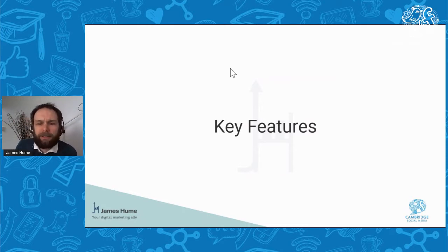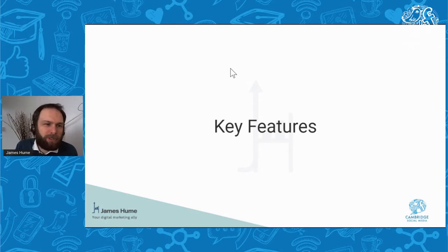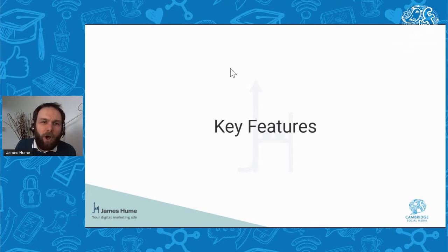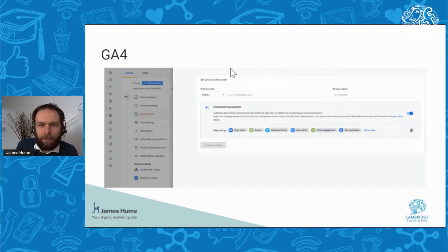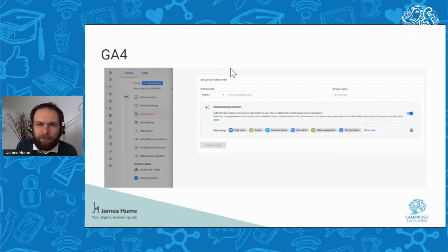Once we've installed the tracking code, let's look at the key features. Some advanced things you can do with tags include capturing e-commerce data like revenue, and using Tag Manager to capture custom events. The newest version of Google Analytics can automatically detect custom things like site search and video engagement, so there's no need to add extra tags.